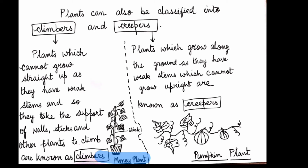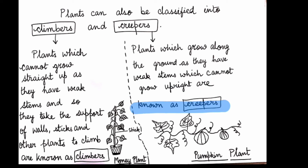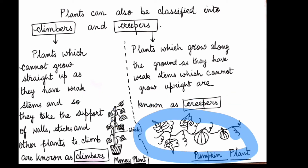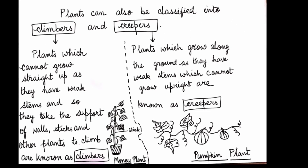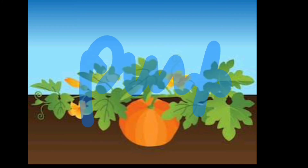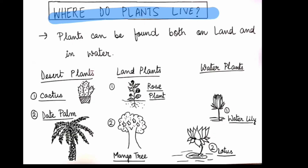Creepers are plants which grow along the ground. They have weak stems and cannot grow upright, so they crawl on the ground. An example of a creeper is the pumpkin plant. Here is a picture of a pumpkin plant as a creeper.